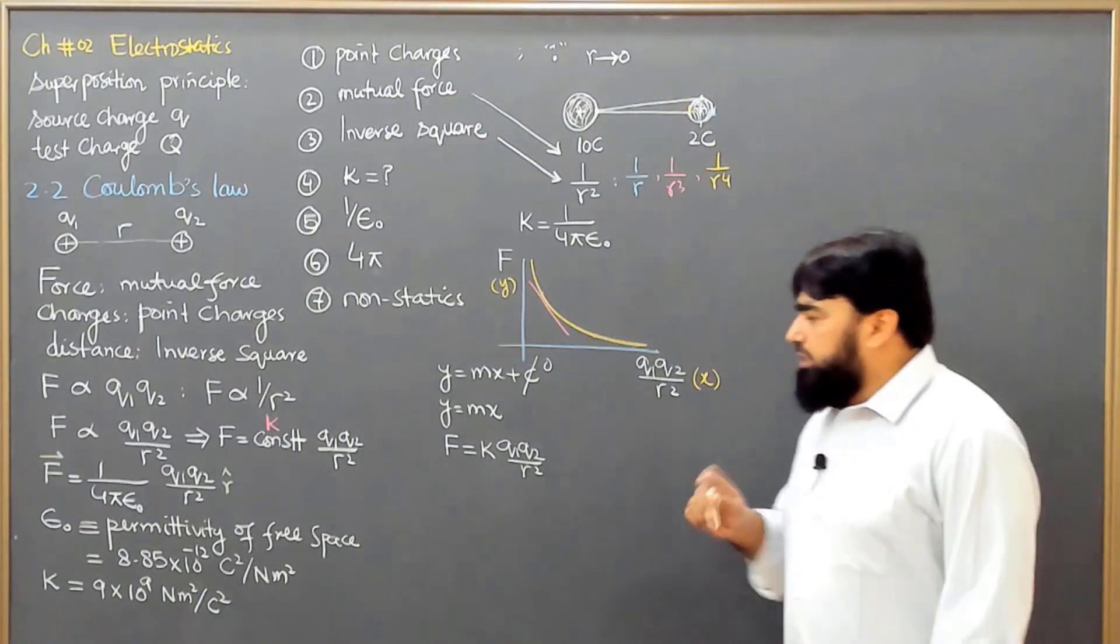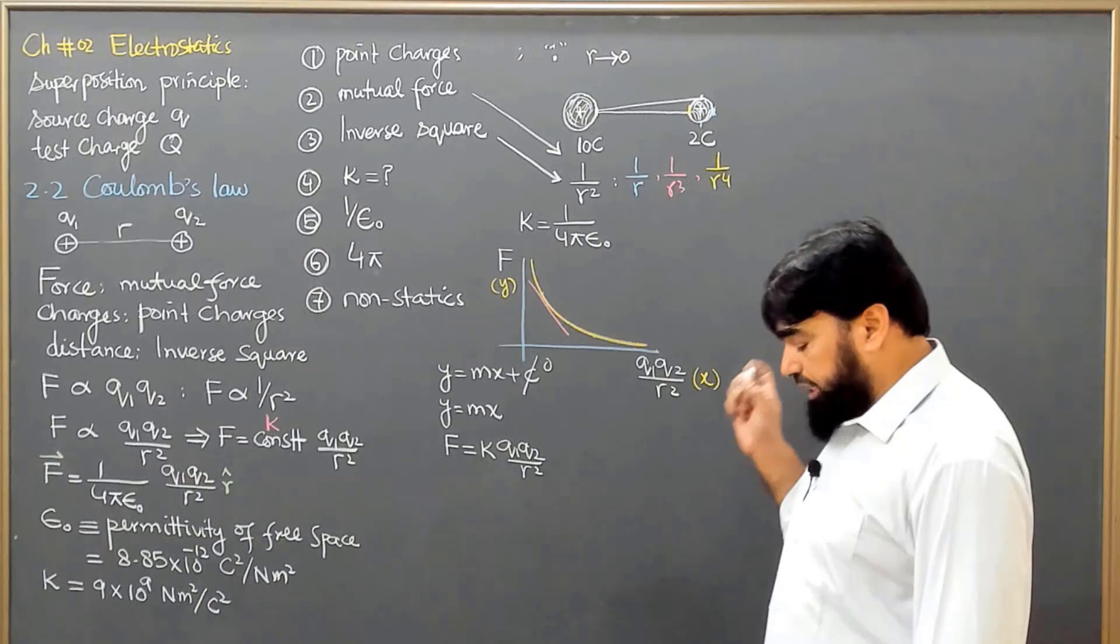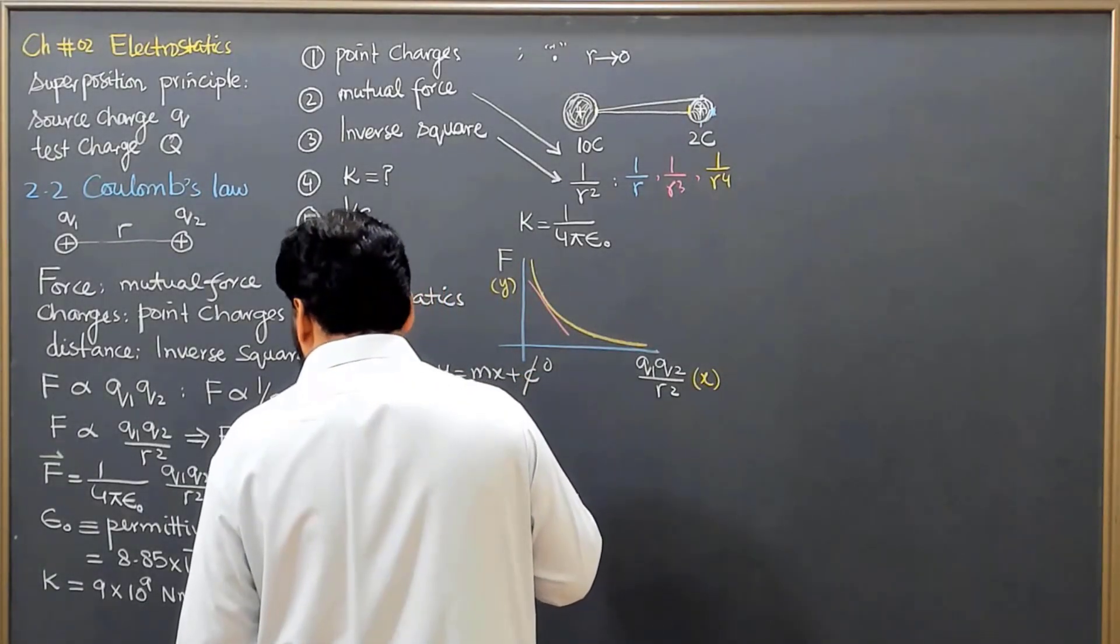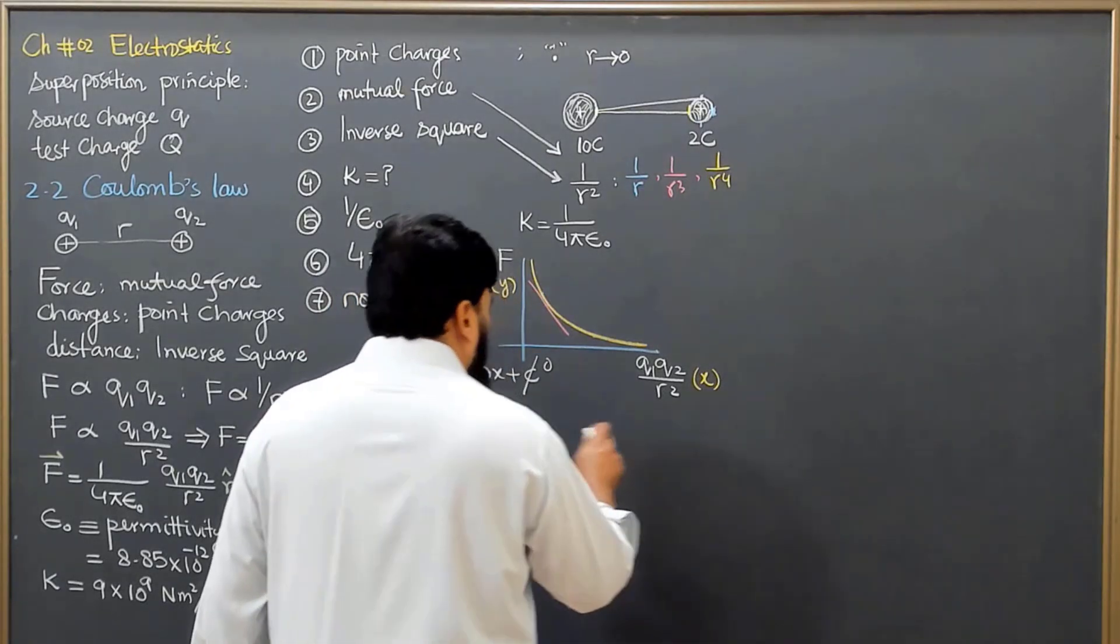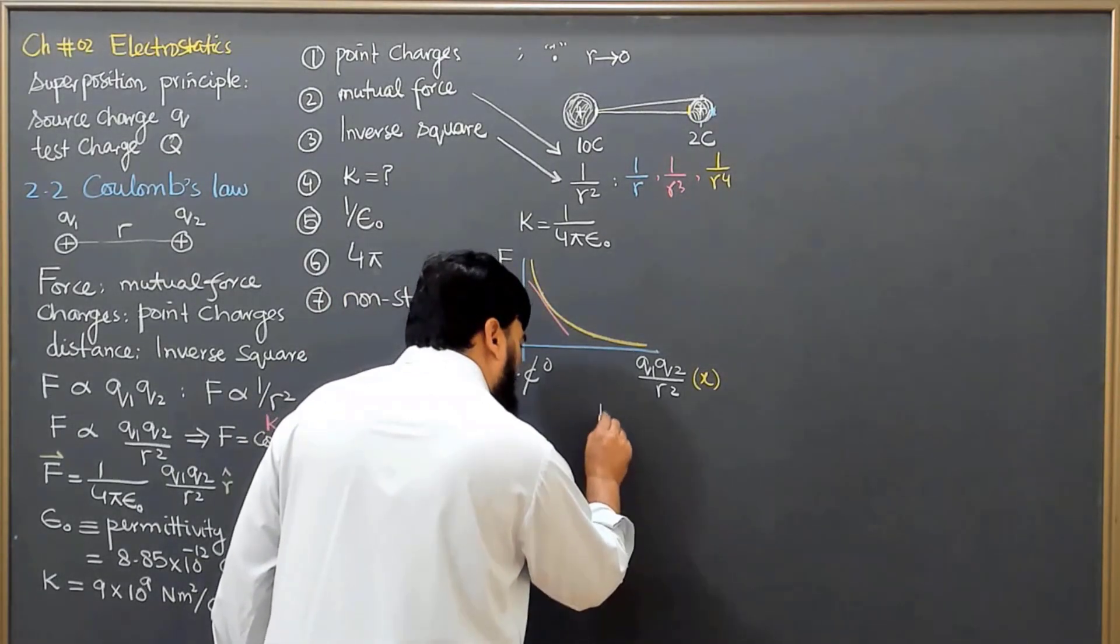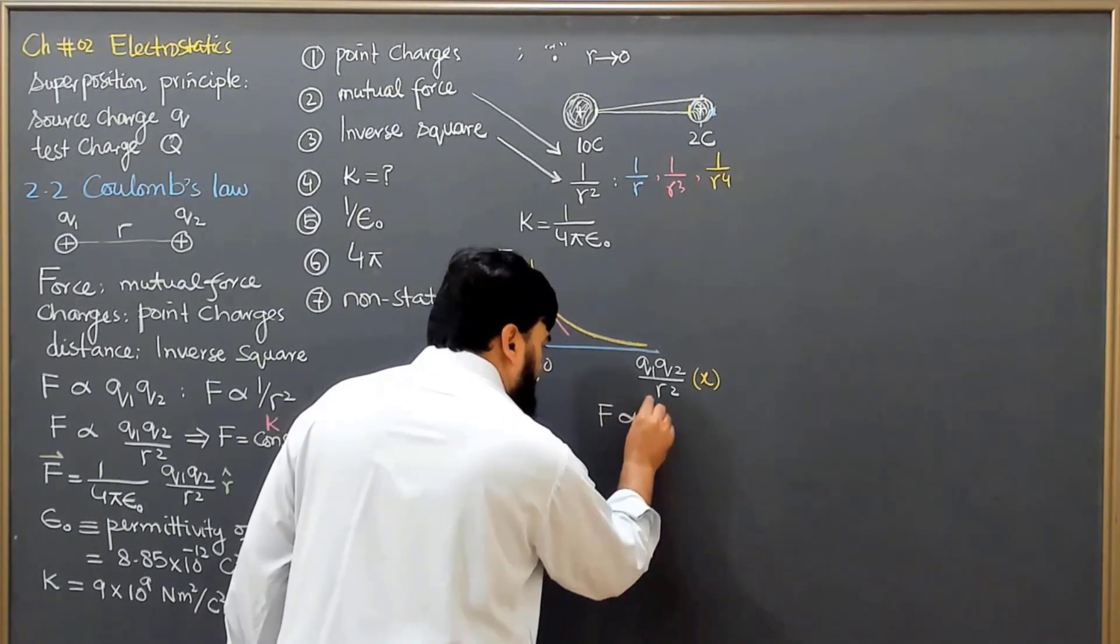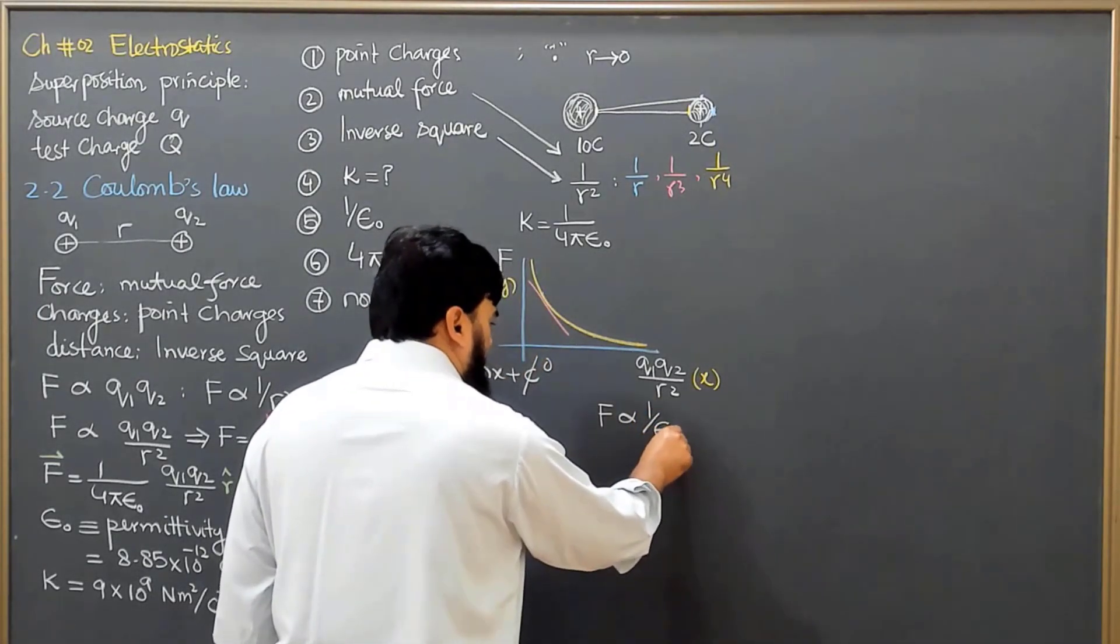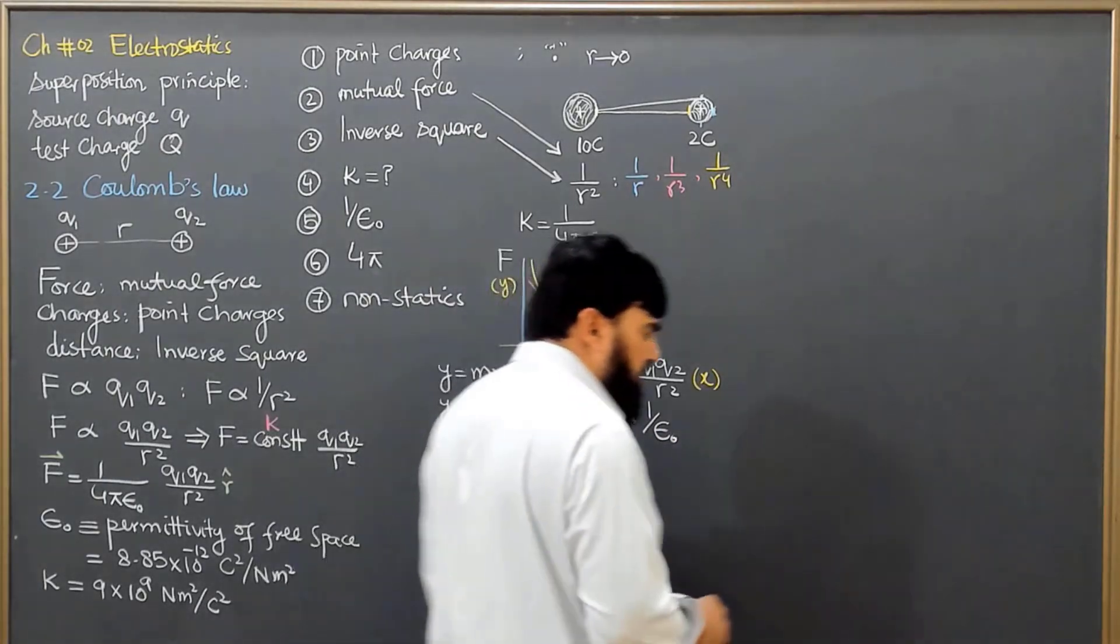So understand this one, that for this proportionality, let me write that F is proportional to 1 over epsilon naught. Now what is epsilon naught, what is permittivity of free space?